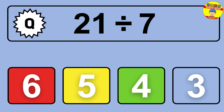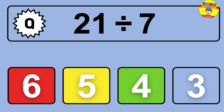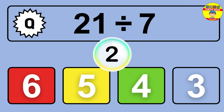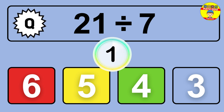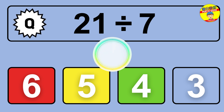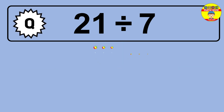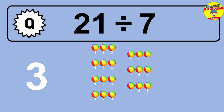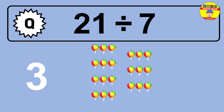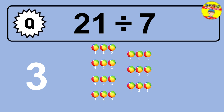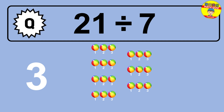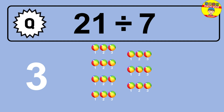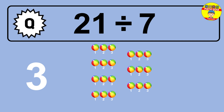21 divided by 7 is... time to think. Let's go to the solution. Divide the number 21 by 7. Each group contains 7 units, so dividing 21 by 7 results in 3 equal groups. Thus, the result is 21 divided by 7 equals 3.